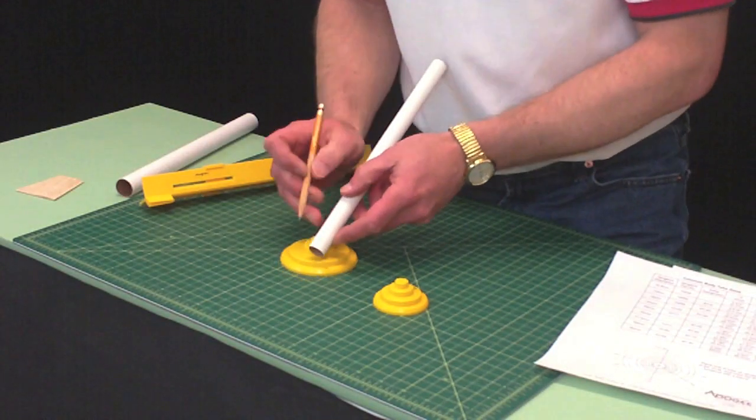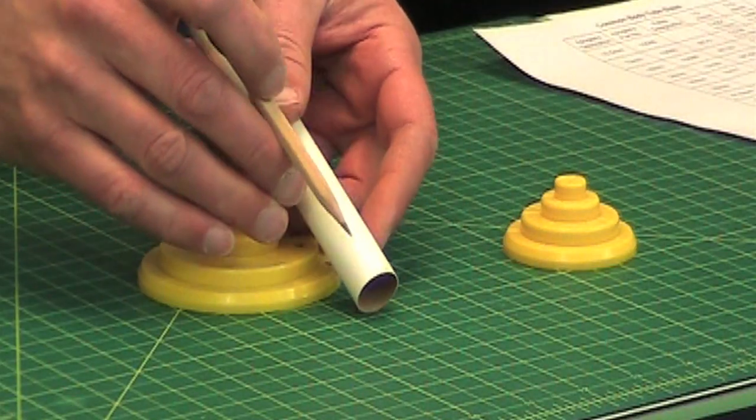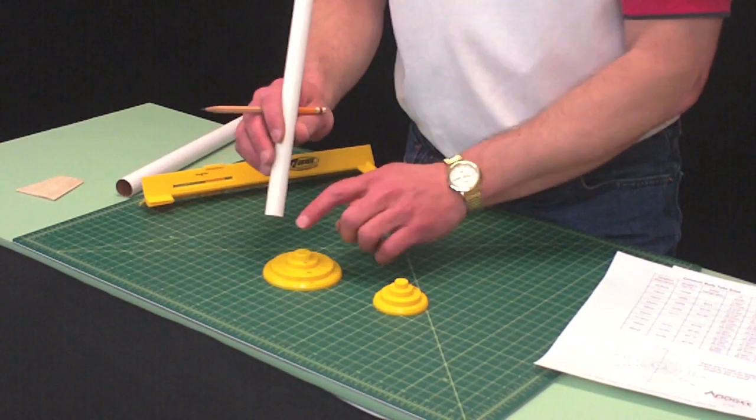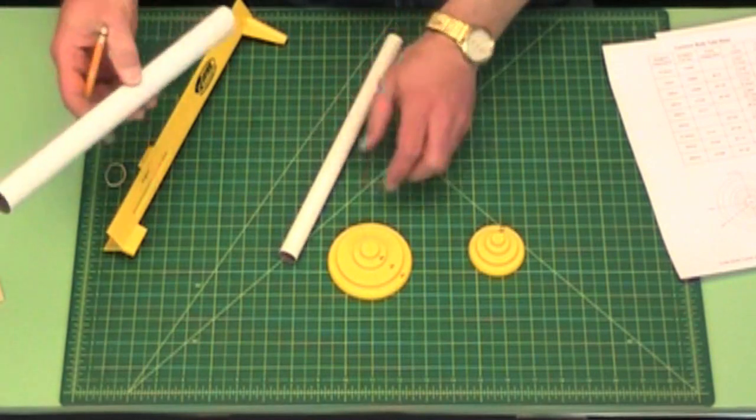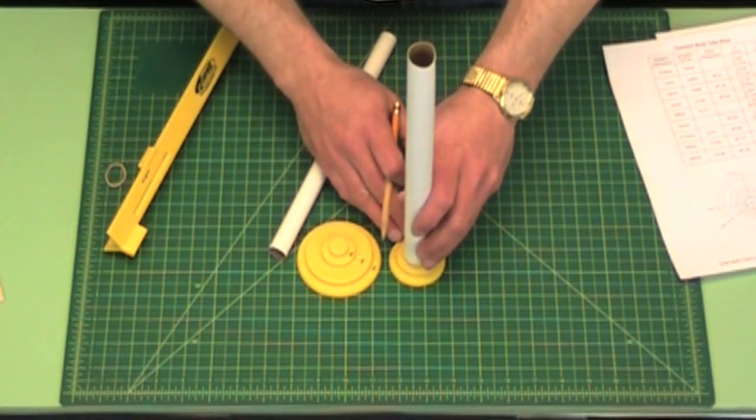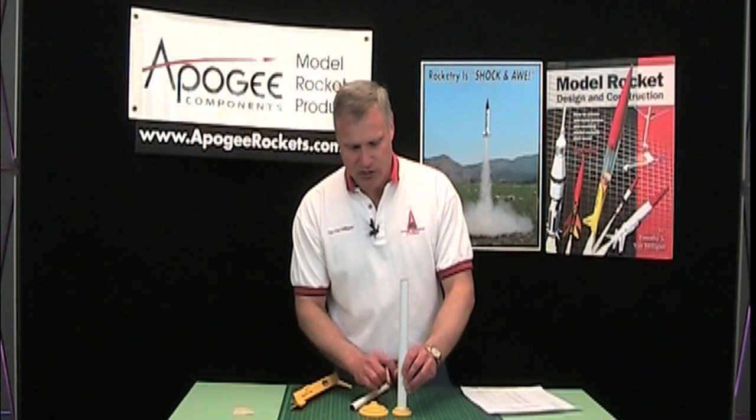These are set up for different size tubes. Like this one here was the 18 millimeter tube. If you want to use a 50 millimeter BT 50 size tube you'd use this one here.